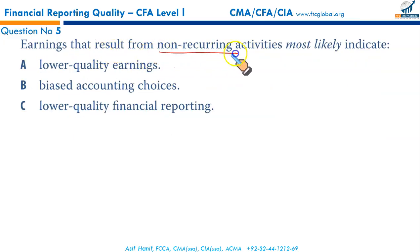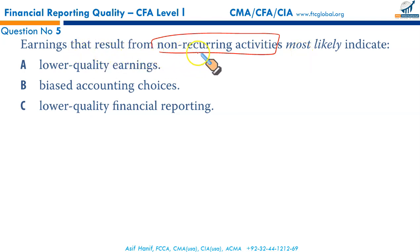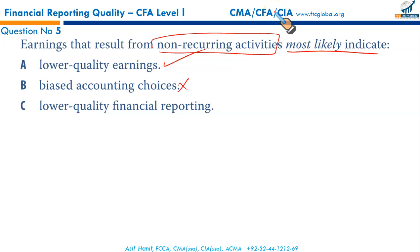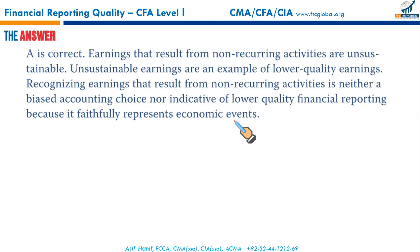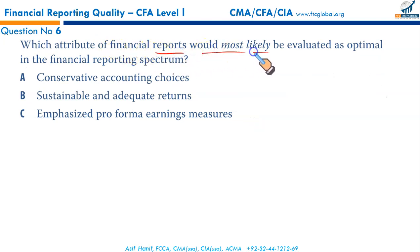Earnings resulting from non-recurring activities — such as gain on disposal, foreign currency gains, and fair value gains on remeasurement of held-for-trading securities (typically done at period end, not daily) — most likely indicate lower quality of earnings. Biased accounting choices would result in lower financial reporting quality, but we don't see that indicated here. There's no indication of low financial reporting quality either. A is the correct option.